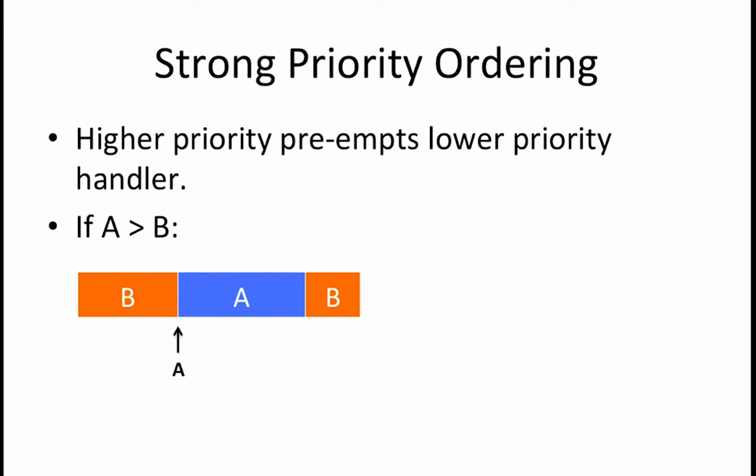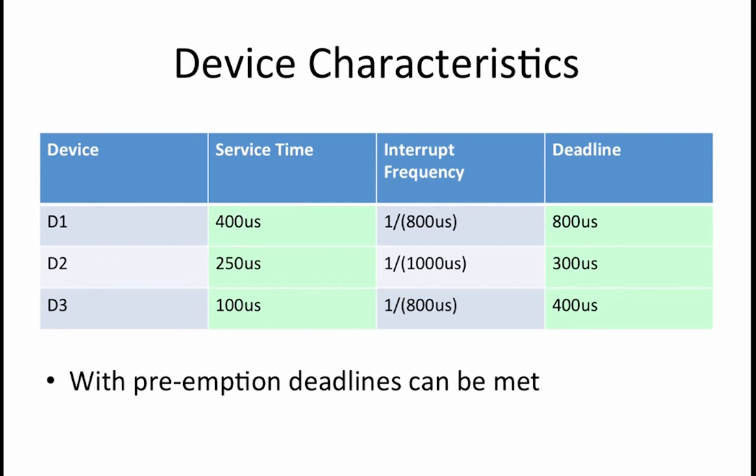Recall that with a strong priority ordering, the handler for a device with a higher priority will preempt a running handler of a lower priority device. In other words, if the priority of A is greater than B, and an A interrupt arrives midway through the handling of a B interrupt, then the B interrupt handler will get interrupted, the A handler will be run, and upon completion of the A handler, the B handler will be resumed. Since we now allow preemption of lower priority device handlers in order to satisfy the requirements of a higher priority handler, we are no longer faced with the issue that devices D2 and D3 can't meet their deadlines if D1 happens to be running first.